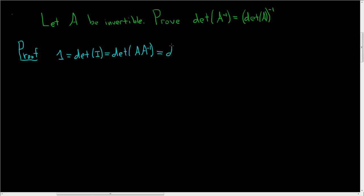And this is equal to the determinant of A times the determinant of A inverse. And dividing both sides by the determinant of A, and we can do that because it's not 0, A is invertible, we end up with 1 over the determinant of A is equal to the determinant of A inverse.